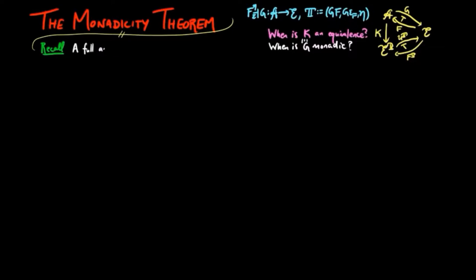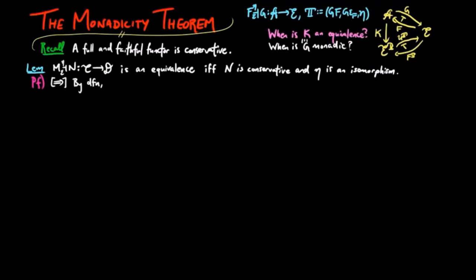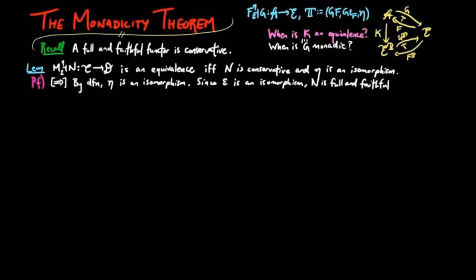We recall that a full and faithful functor is conservative, and we prove the following lemma. In an adjoint situation, MN is an equivalence if and only if N is conservative and the unit eta is an isomorphism. To prove the forward direction, by the definition of an equivalence, we have eta is an isomorphism. Then since epsilon is also an isomorphism by the definition of an equivalence, N is full and faithful — a result covered in the playlist on adjoint situations — and therefore N is also conservative.